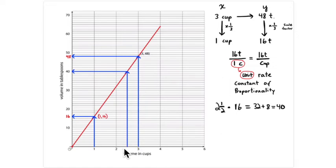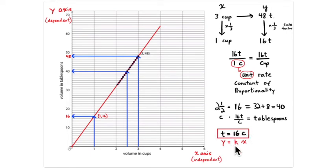To verify on the graph: two and a half is eight-sixteenths, or one half, of the way between two and three on the x-axis. Counting up eight units from thirty-two gets to forty. Reading across to the y-axis confirms forty tablespoons. So the equation is: number of tablespoons equals sixteen times the number of cups. Whatever number of cups you have, multiply by sixteen to get tablespoons — that's the dependent variable.